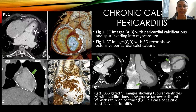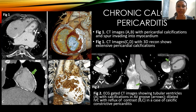In chronic calcific pericarditis, figure 1 shows CT images with pericardial calcification and spurs invading into the myocardium (images A and B), while images C and D with 3D reconstruction show extensive pericardial calcifications. Figure 2 shows ECG-gated CT images demonstrating tubular ventricles with calcification in the AV groove and dilated IVC with reflux of contrast, consistent with calcific constrictive pericarditis.